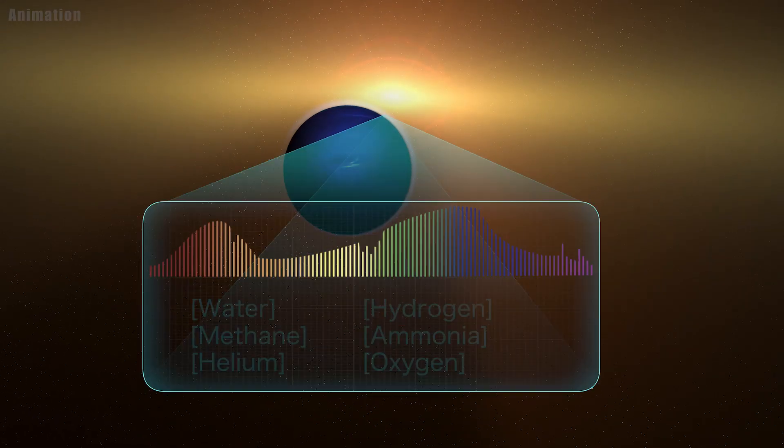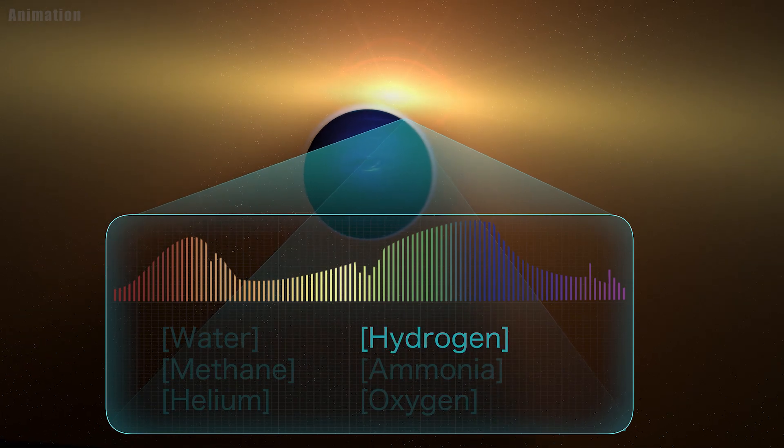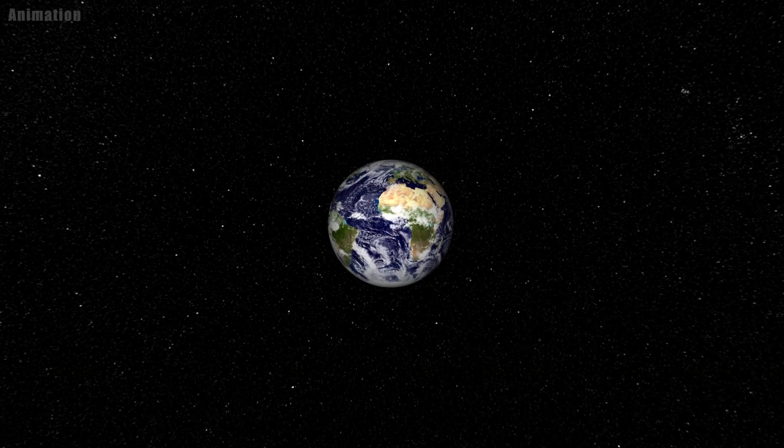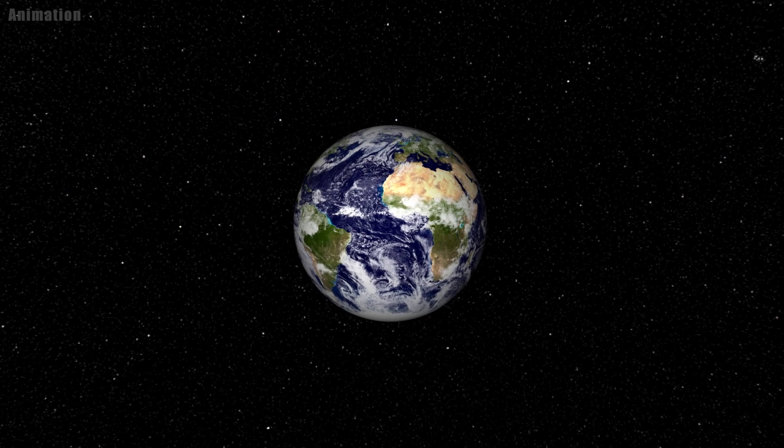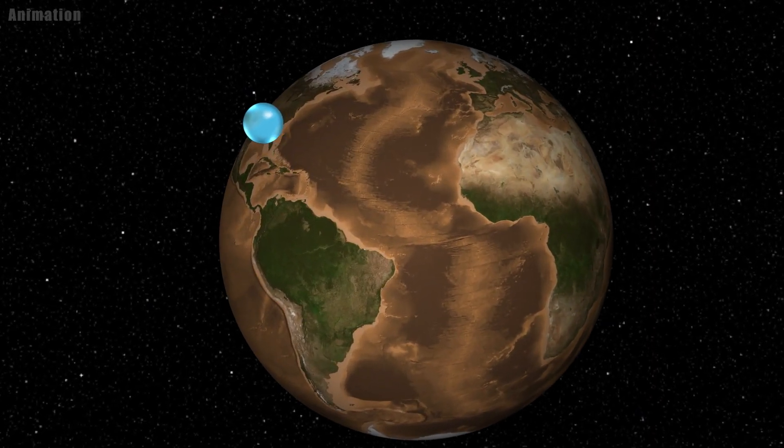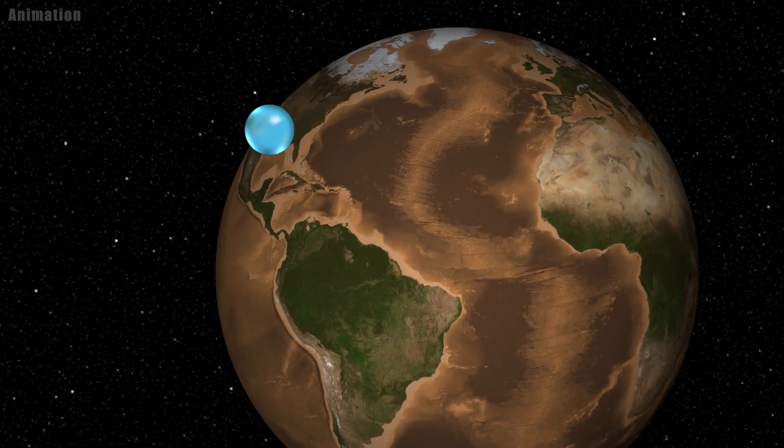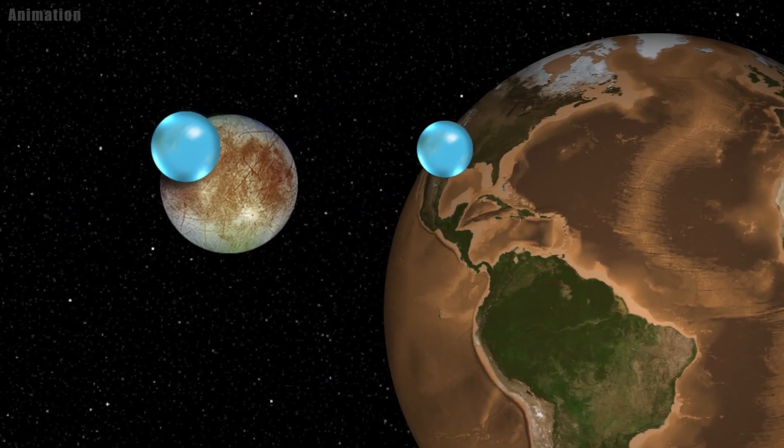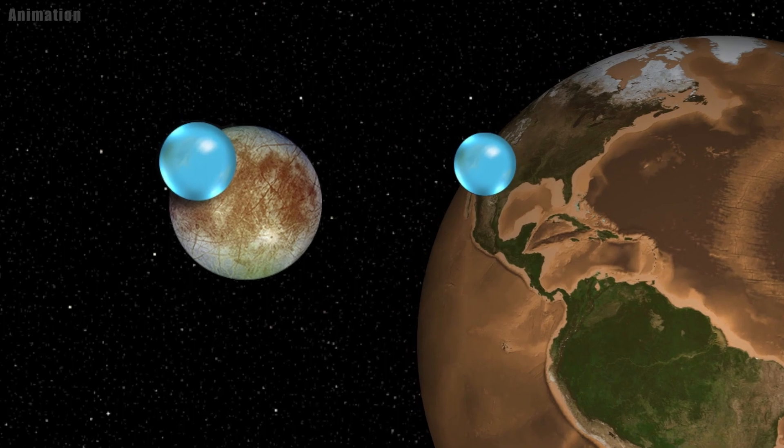Astronomers didn't directly detect water on the Kepler-138 planets. Instead, they compared the planet's sizes and masses to models that concluded up to half of their volume should be made of materials lighter than rock, but heavier than hydrogen or helium. The most common of these materials is water.